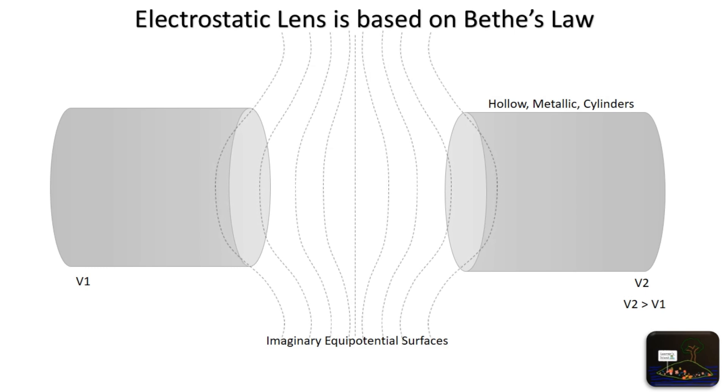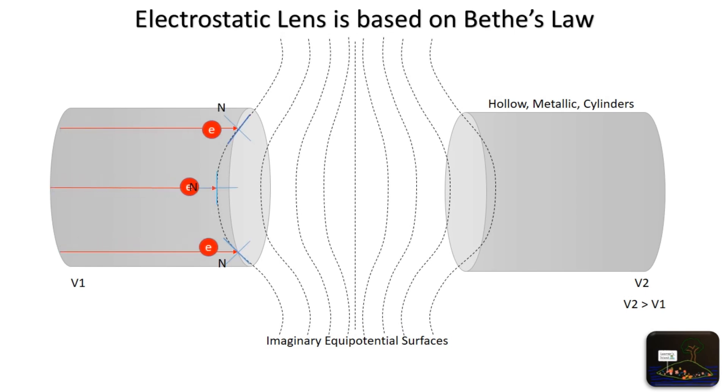Consider the imaginary equipotential surfaces between the two cylinders. From these equipotential surfaces, the bending of electron beams can be imagined. The electron beam can be studied for three cases: electron beam on upper half, electron beam on the middle, and electron beam on lower half.